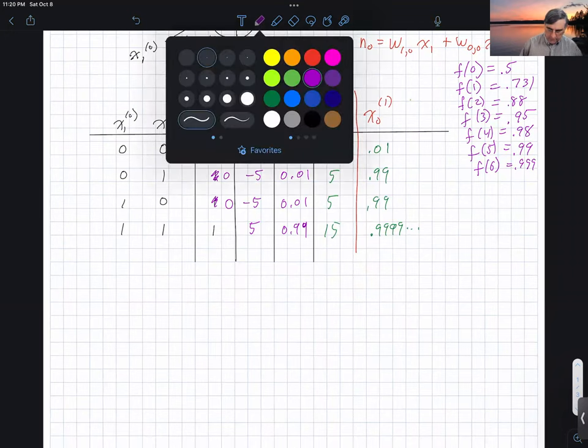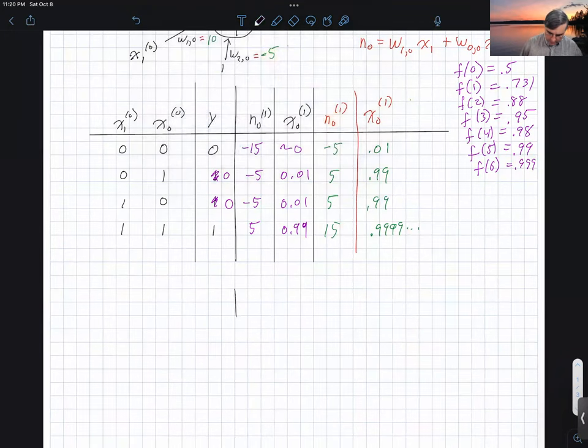So imagine that we have this space here where we have two axes that correspond to our X0 and X1. As we've talked about, each of these can take on one of two values. X0 can either be 0 or it can be 1. And likewise, X1 can either be 0 or it can be 1.